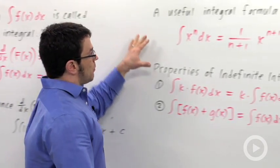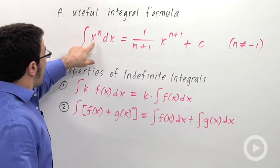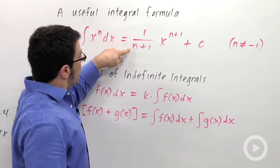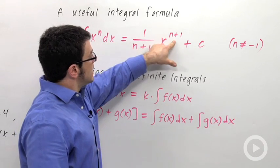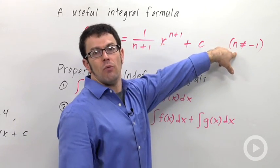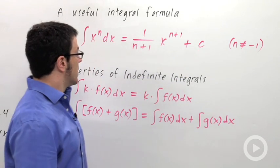A useful integral formula we'll be using a lot: this is how to integrate a power function, x^n. The antiderivatives will be 1/(n+1) times x^(n+1) + c. This formula only works if n isn't negative 1. We need another formula if n is negative 1.